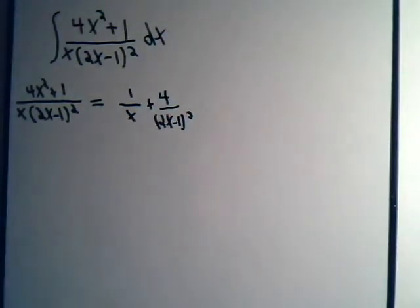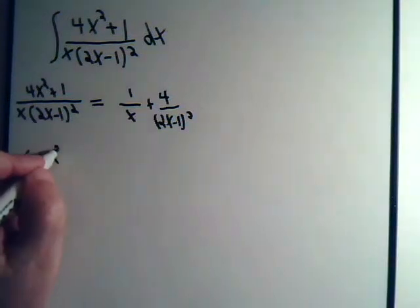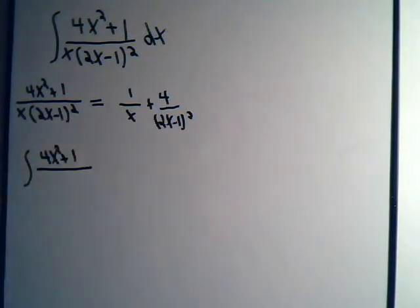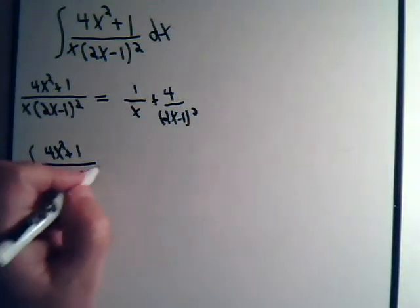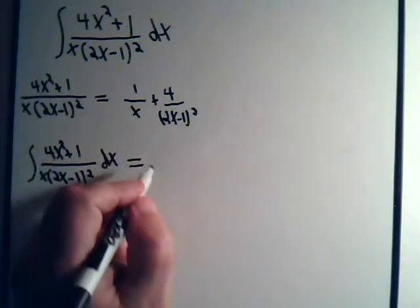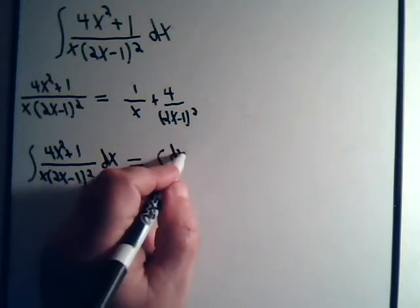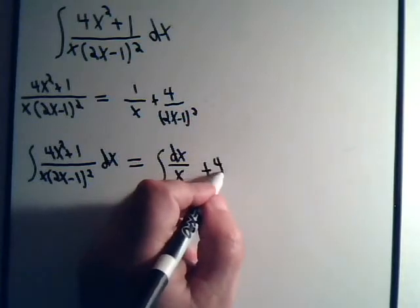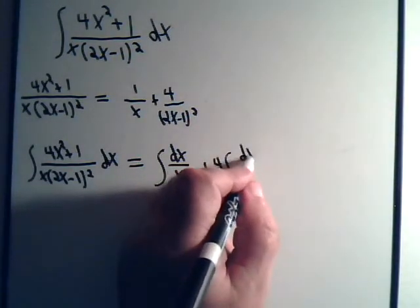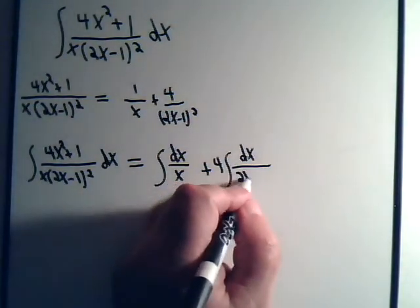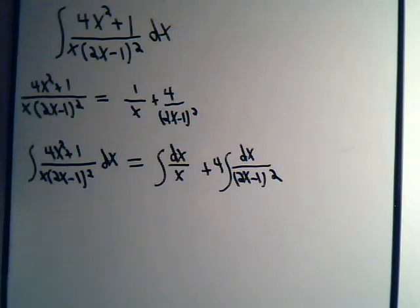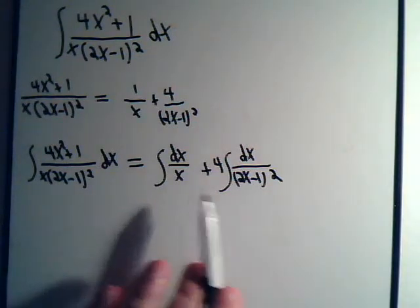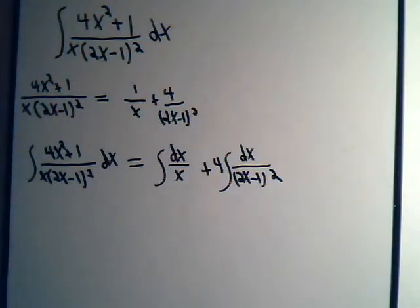So we should be able to handle this now. We have our original integral. 4x squared plus 1 divided by x times 2x minus 1 squared dx. And that will equal the integral of dx over x plus 4 times the integral of dx divided by 2x minus 1 squared. So notice how using partial fractions broke this integral up into two much simpler integrals.